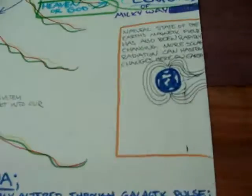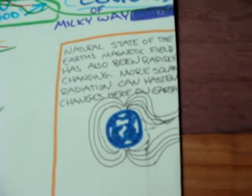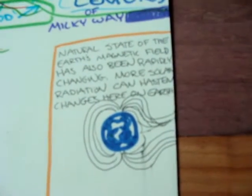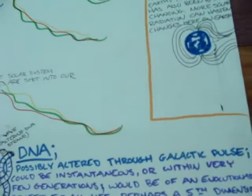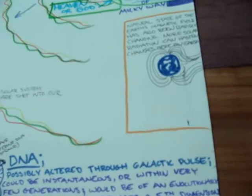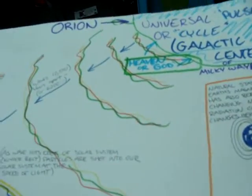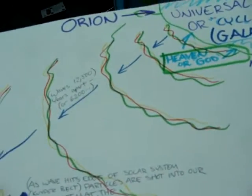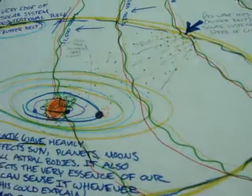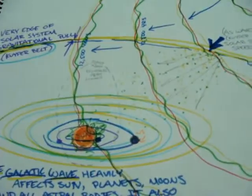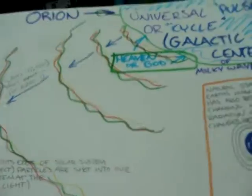Over here I have a picture of the Earth's natural magnetic field. What it looks like right now is a complete mess. And what that does is it makes the normal waves that we can usually repel even worse.